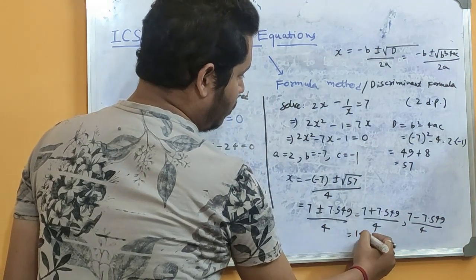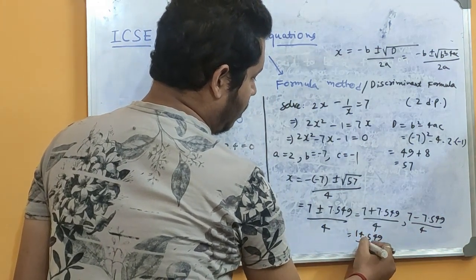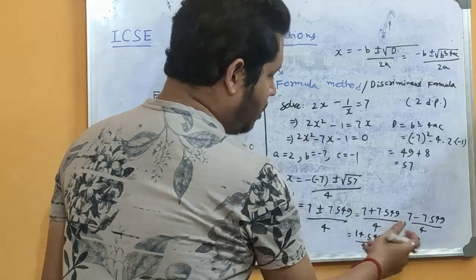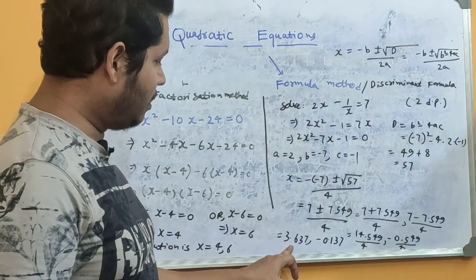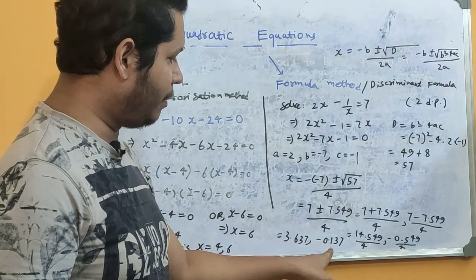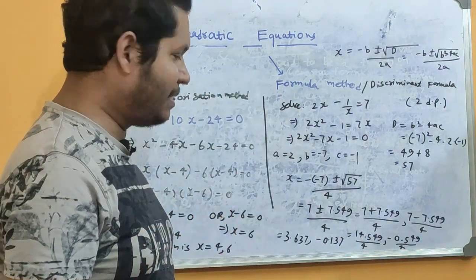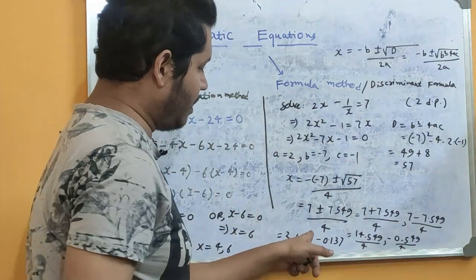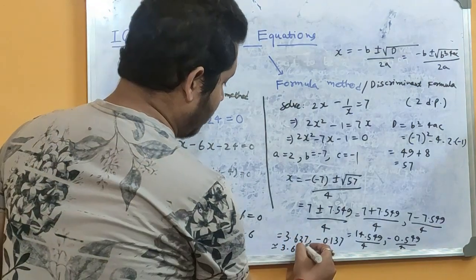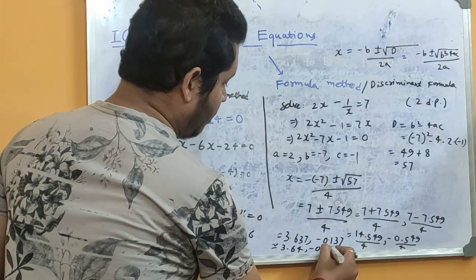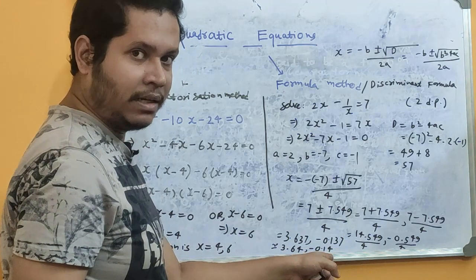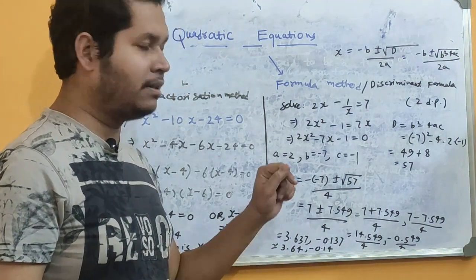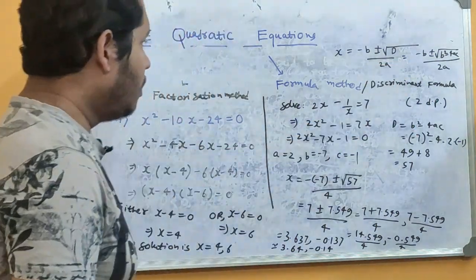For the plus case: (7 + 7.549) / 4 = 14.549 / 4 = 3.637. For the minus case: (7 − 7.549) / 4 = −0.549 / 4 = −0.137. I have taken these to the third decimal place on purpose. Rounding to the second decimal place: 3.637 rounds to 3.64 (since the next digit is ≥ 5), and −0.137 rounds to −0.14. Therefore, the solution is x = 3.64 or x = −0.14, rounded to the second decimal place.